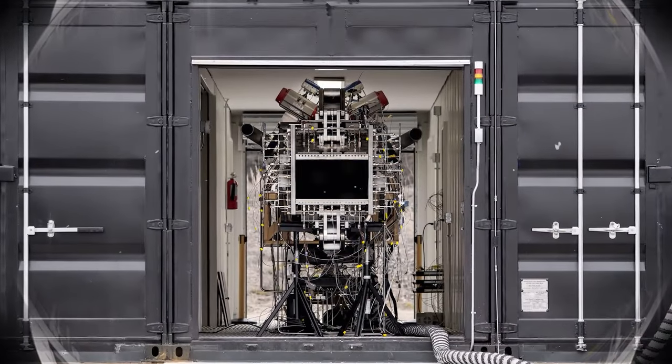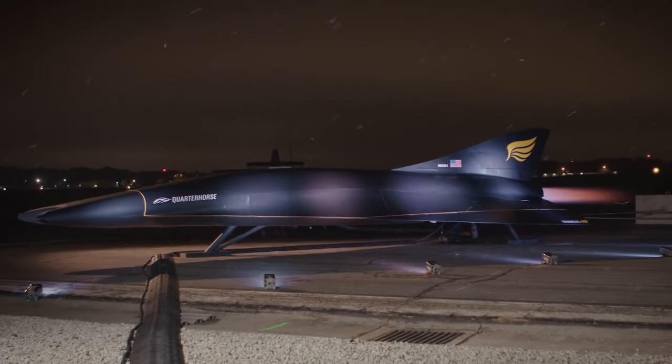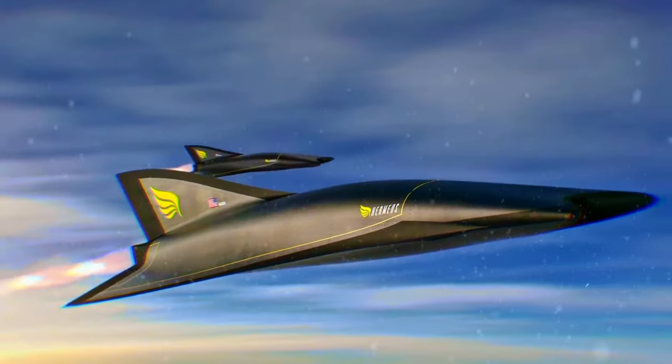Chimera. It's like a transformer, but instead of turning into a robot, it can switch between turbojet and ramjet modes. This allows Hermeus' first aircraft, the Quarter Horse, to take off from a regular runway and then accelerate up to high Mach speeds.